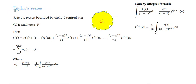Taylor series: Let R be the region bounded by the circle capital C. If we take any function f(z) which is analytic inside R, then f(z) is expanded in the form: f(a) + (z−a)f'(a) + (z−a)²/2! × f''(a) + (z−a)³/3! × f'''(a) + ...